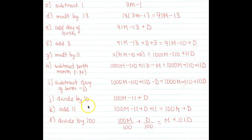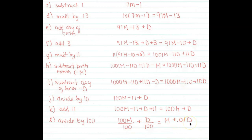Add 11 — those terms cancel, leaving 100m plus d. Final step: divide by 100. 100m divided by 100 gives m, and d divided by 100 gives d/100. So if your birthday was February 2nd, this yields 2.02 — you put in 2 for m and 2 for d, and that's exactly what you get on your calculator. I want to emphasize again how important it is to organize this logically.